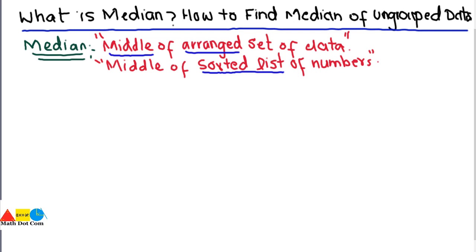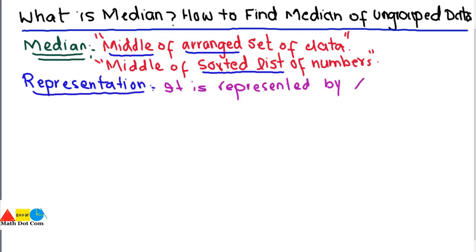Median helps to divide a set of data into two equal parts. Its symbol is x̃ — that is, x with a tilde sign on top — which is used to represent the median of a set of data.